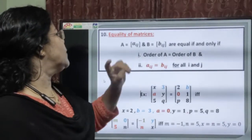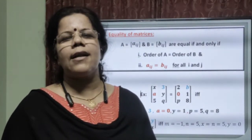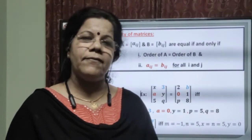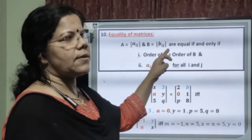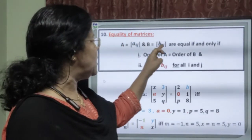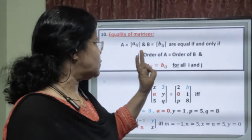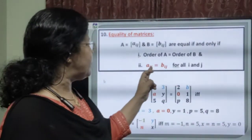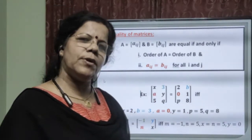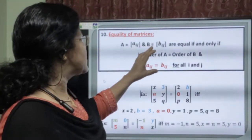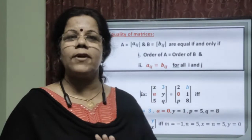Now comes the very important concept of equality of matrices. If two matrices A and B are given, A equals B if and only if the order of A is equal to the order of B, and A_ij equals B_ij for all i and j. That is, the corresponding elements are equal. So the order of A must equal the order of B, and A_ij must equal B_ij for every i and j.